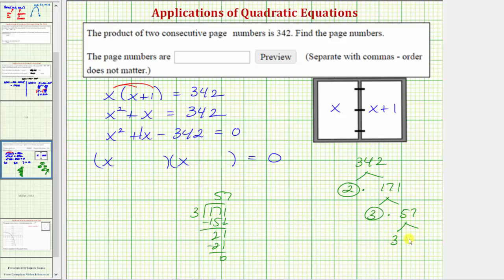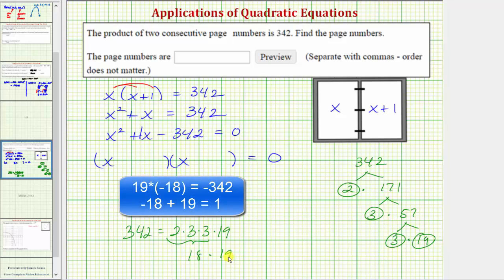57 is equal to 3 times 19. So now we have the prime factorization of 342. 342 is equal to 2 times 3 times 3 times 19. And notice that 2 times 3 times 3 is equal to 18. And therefore we know that 342 is equal to 18 times 19, which will help us determine the factors of negative 342 that add to positive 1. If we used a positive factor of 19 and a negative factor of 18, we would get negative 342 and negative 18 plus 19 is positive 1.